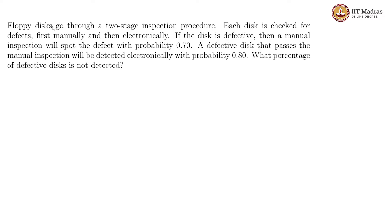In this problem, we have floppy disks which go through a two-stage inspection procedure. Each disk is checked for defects first manually then electronically. If the disk is defective, then a manual inspection will spot the defect with probability 0.7. A defective disk that passes through the manual inspection will be detected electronically with a probability of 0.8. What percentage of defective disks is not detected?